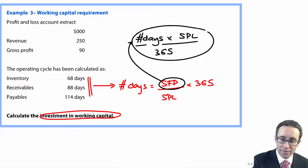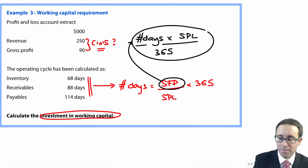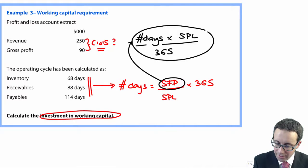What we're going to do is take the number of days, multiply that by the profit or loss figure, and then divide by 365 to rearrange that equation. We've got the number of days here in terms of inventory, receivables, and payables. We've got the revenue, which we will use. We're given gross profit. We could work out your cost of sales quite simply by being the difference - 250 less 90 is 160. So cost of sales is 160,000.